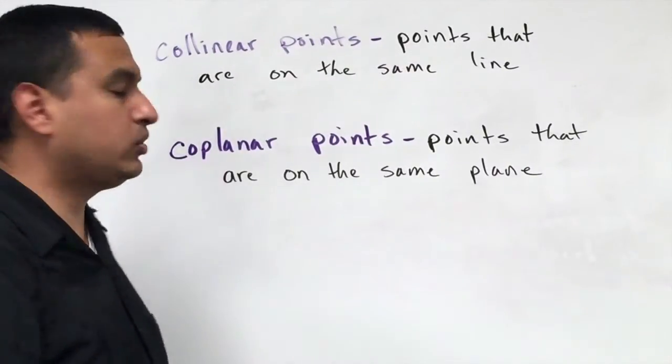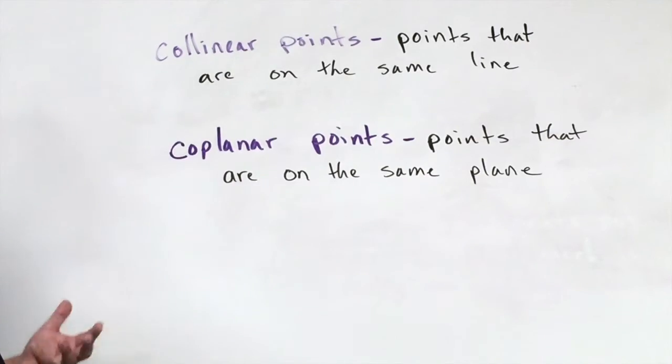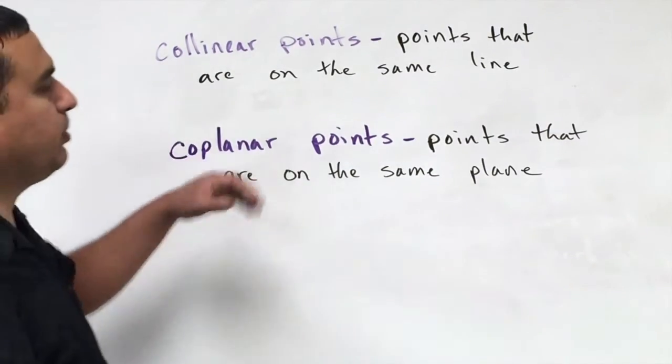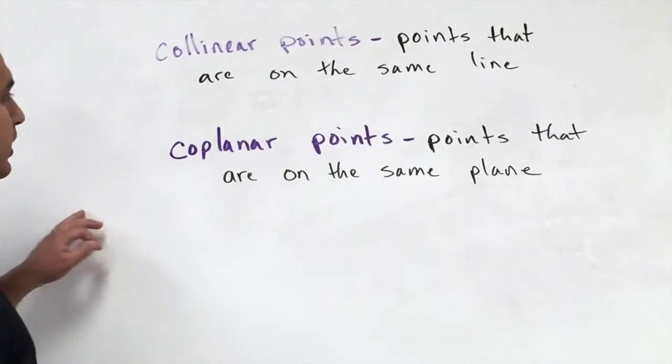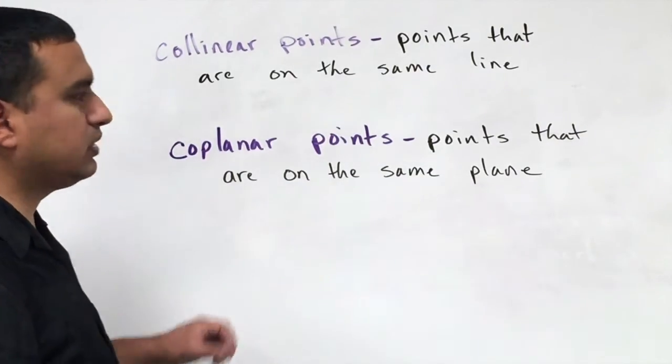Two other vocabulary words that you do need to write down, and you do need to know what they are, is collinear points, which means points that are on the same line, and coplanar points, points that are on the same plane.